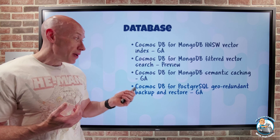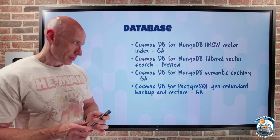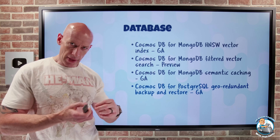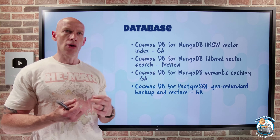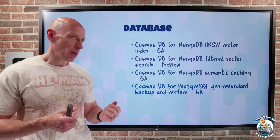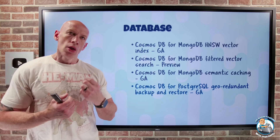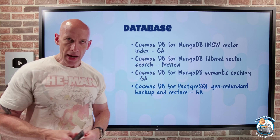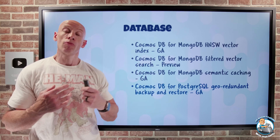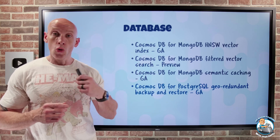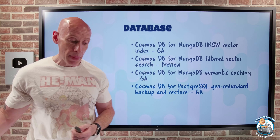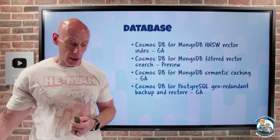Cosmos DB for PostgreSQL — remember, this uses the Citus extension for large scale and high performance — now has geo-redundant backup and restore. Those backups will get replicated to the paired region, giving me resiliency from region-level outages. I could also opt to restore that backup to the paired region as well.